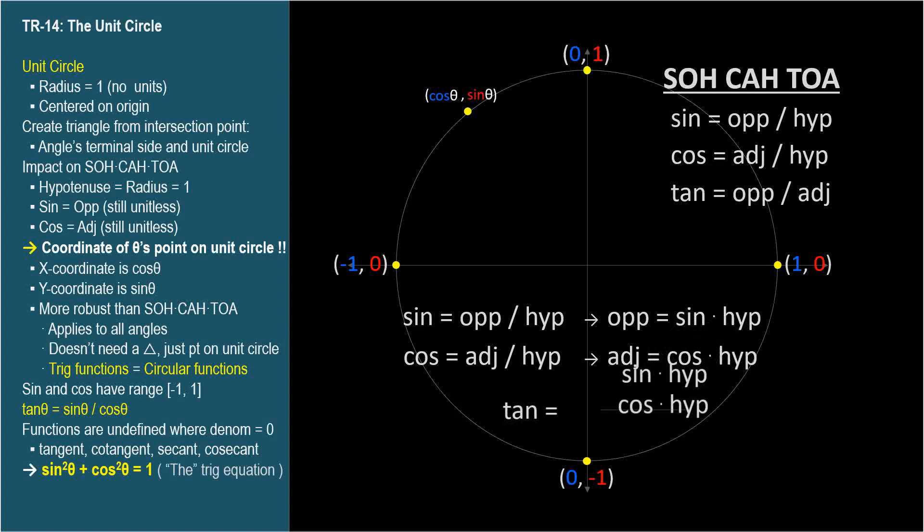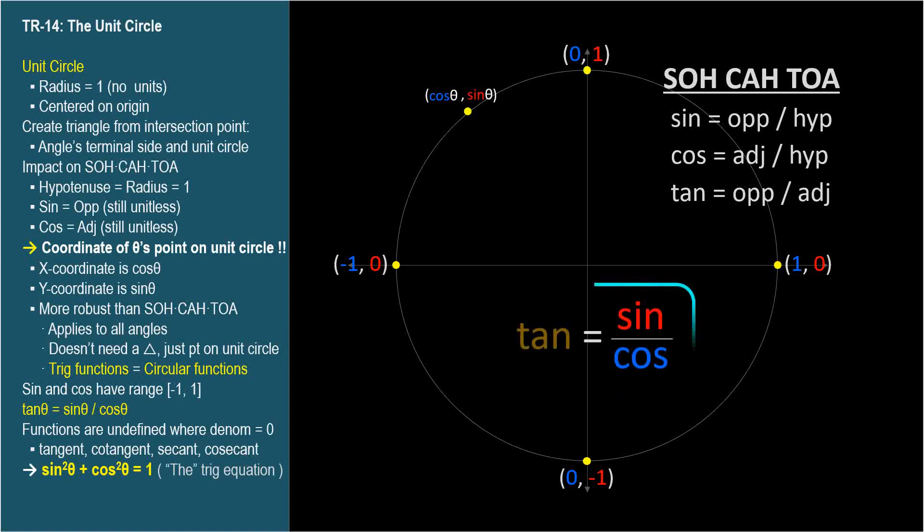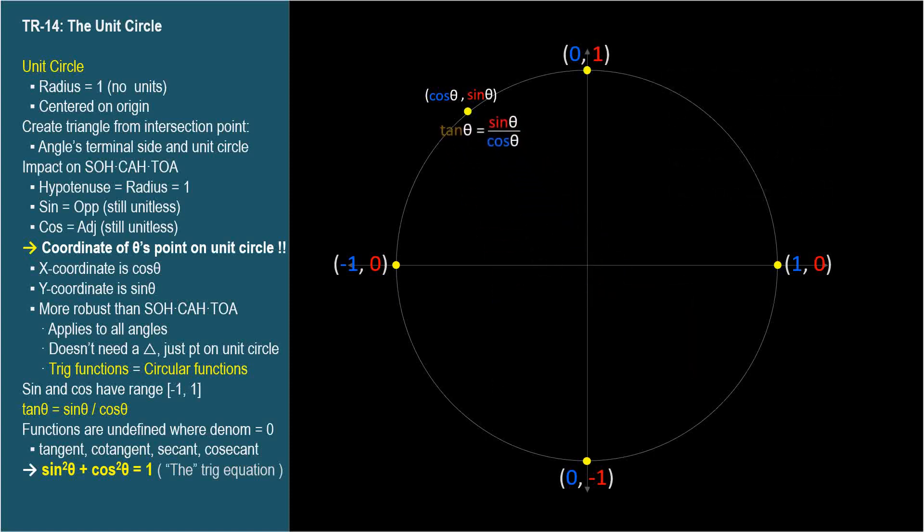let's substitute them in to get tangent equals sine times hypotenuse divided by cosine times hypotenuse. Cancel the hypotenuse and we get tangent equals sine over cosine, which is the general definition of tangent. Please add this to your short list of things to memorize. Tangent equals sine over cosine.